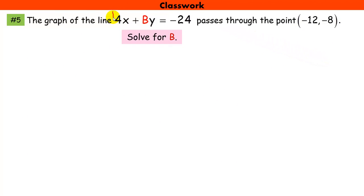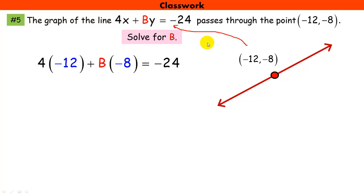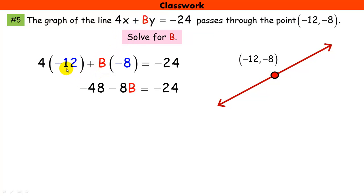Number 5: the graph of a line in standard form passes through a specific point, and I want the coefficient of y. Since the point is on the line, it must satisfy the equation. I plug in the x and y values — the only unknown is the coefficient of y. Very simply, adding 48 and dividing by negative 8 gives a coefficient of negative 3.